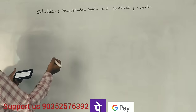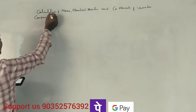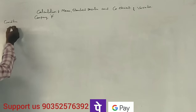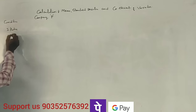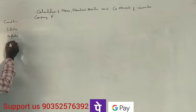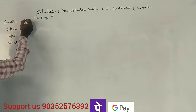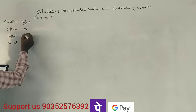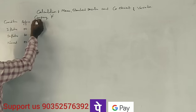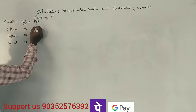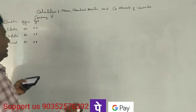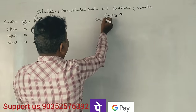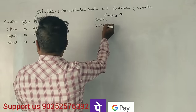Now, for Company P, we set up the table with three conditions: inflationary, deflationary, and normal. The cash inflow returns are Rs. 50, Rs. 60, and Rs. 55. The corresponding probabilities are 0.4, 0.3, and 0.3.